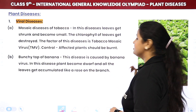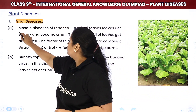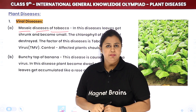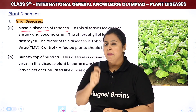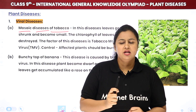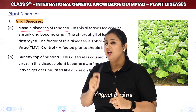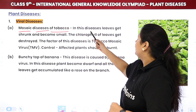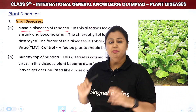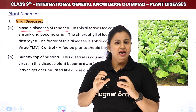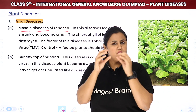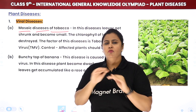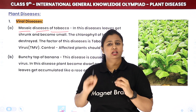The first viral disease in plants is Mosaic Disease of Tobacco. If you remember when we studied viruses and bacteria, we studied this particular terminology. In this disease, leaves get shrunk and become small. The chlorophyll of leaves gets destroyed and is affected by the disease.